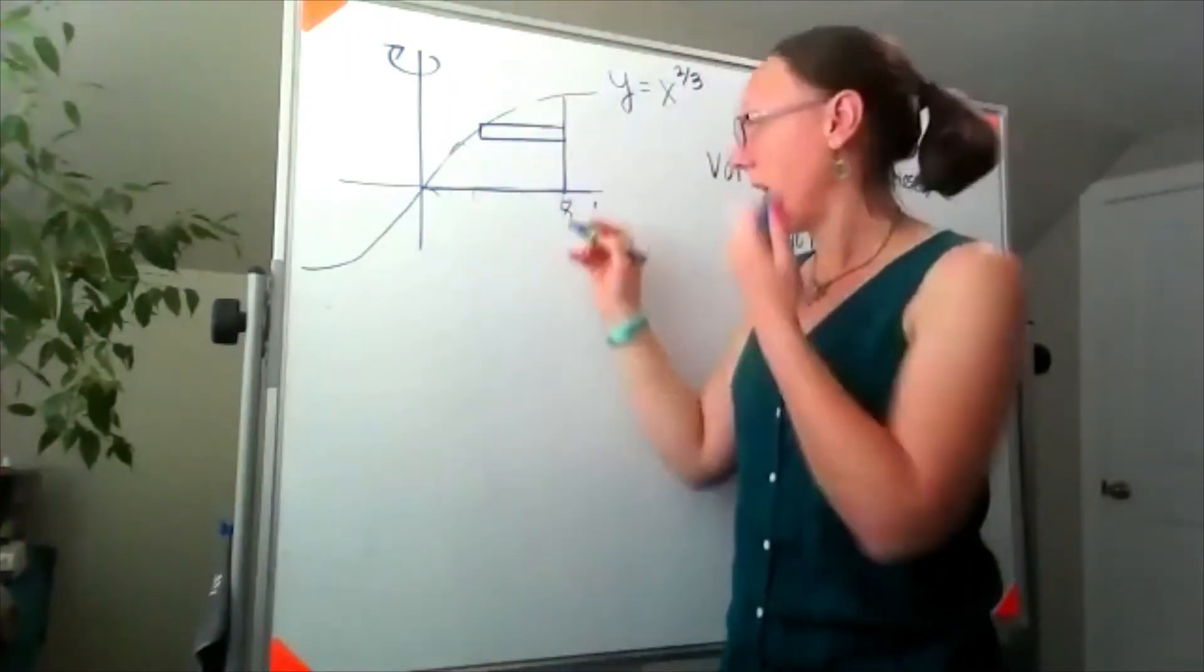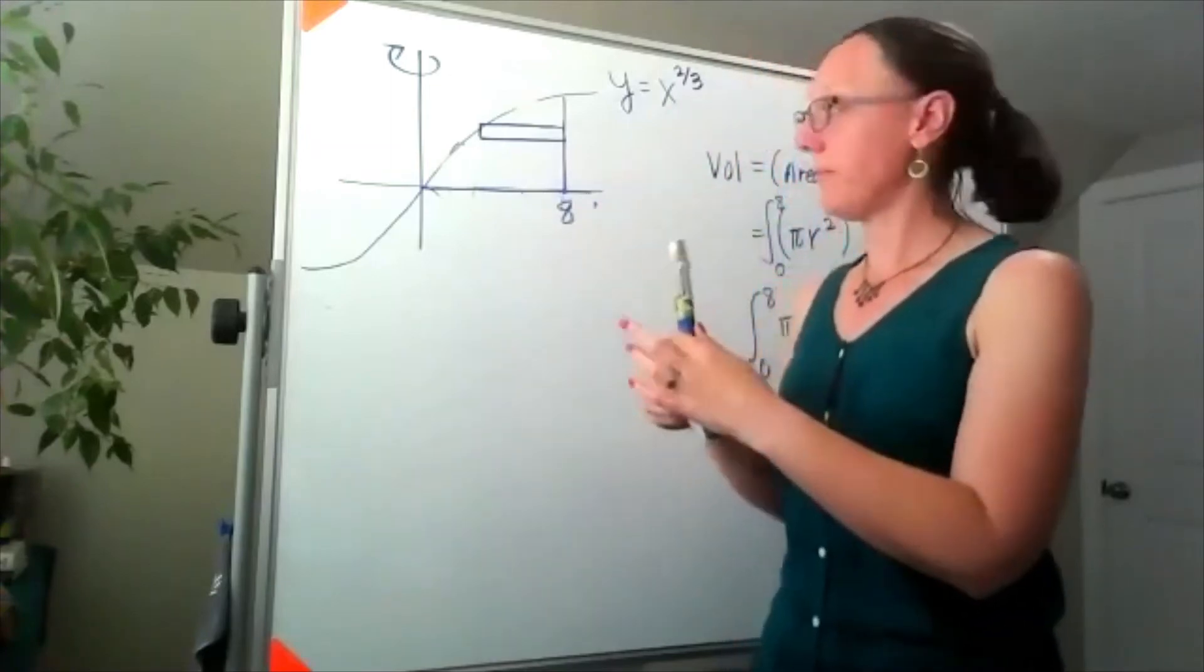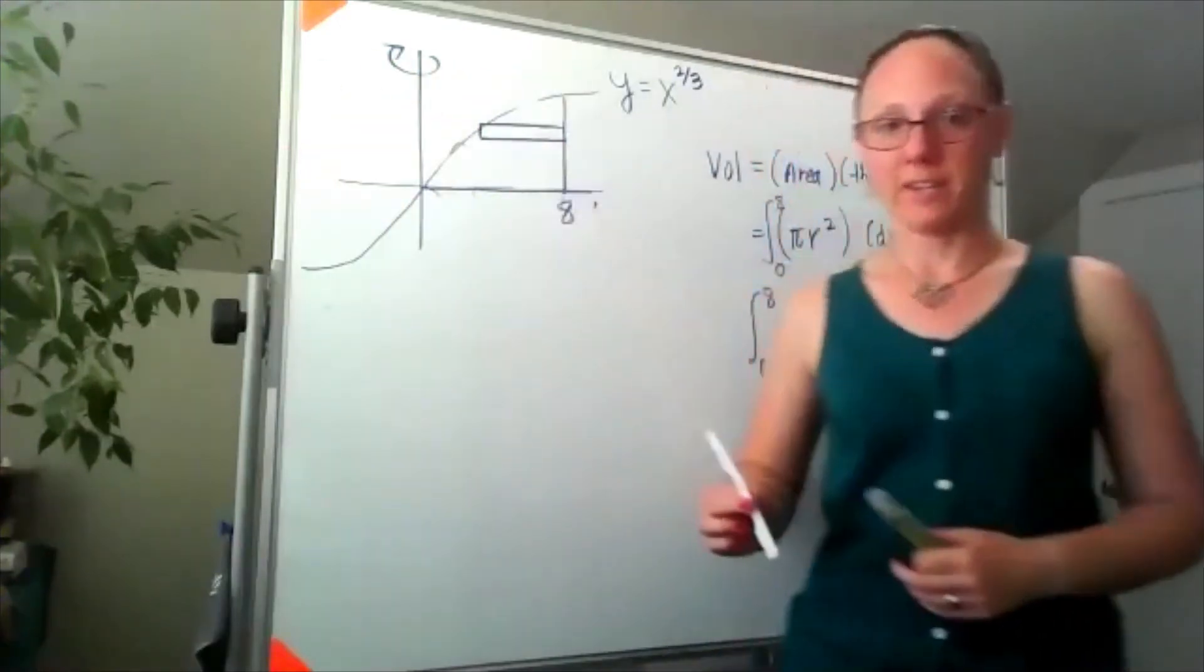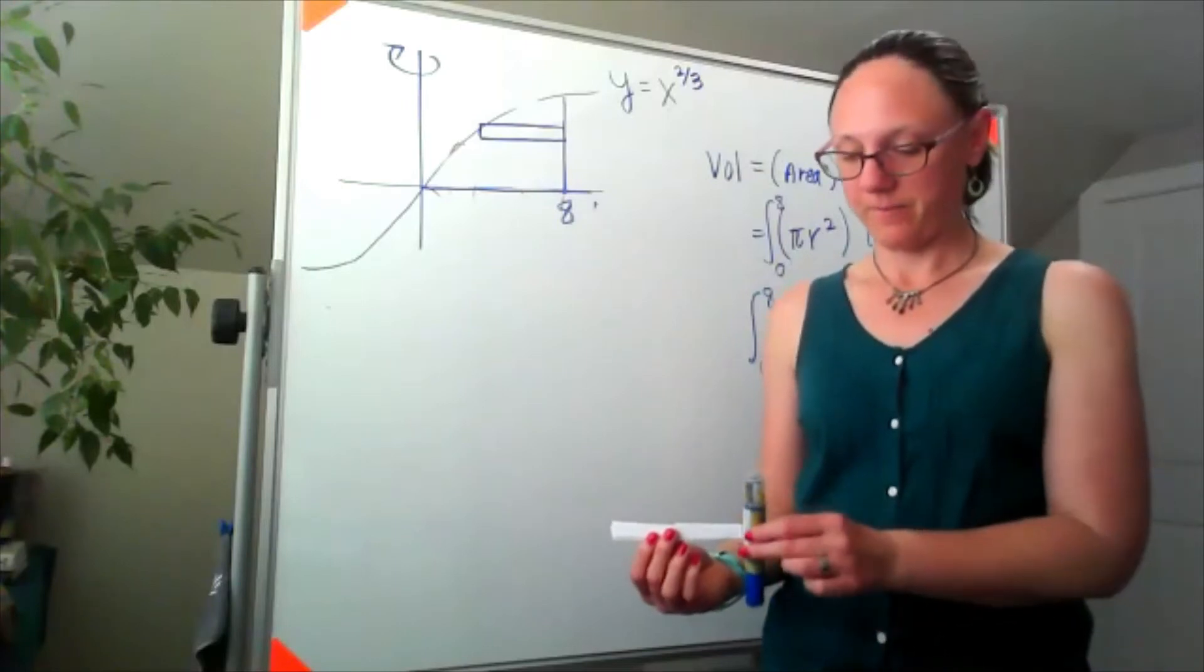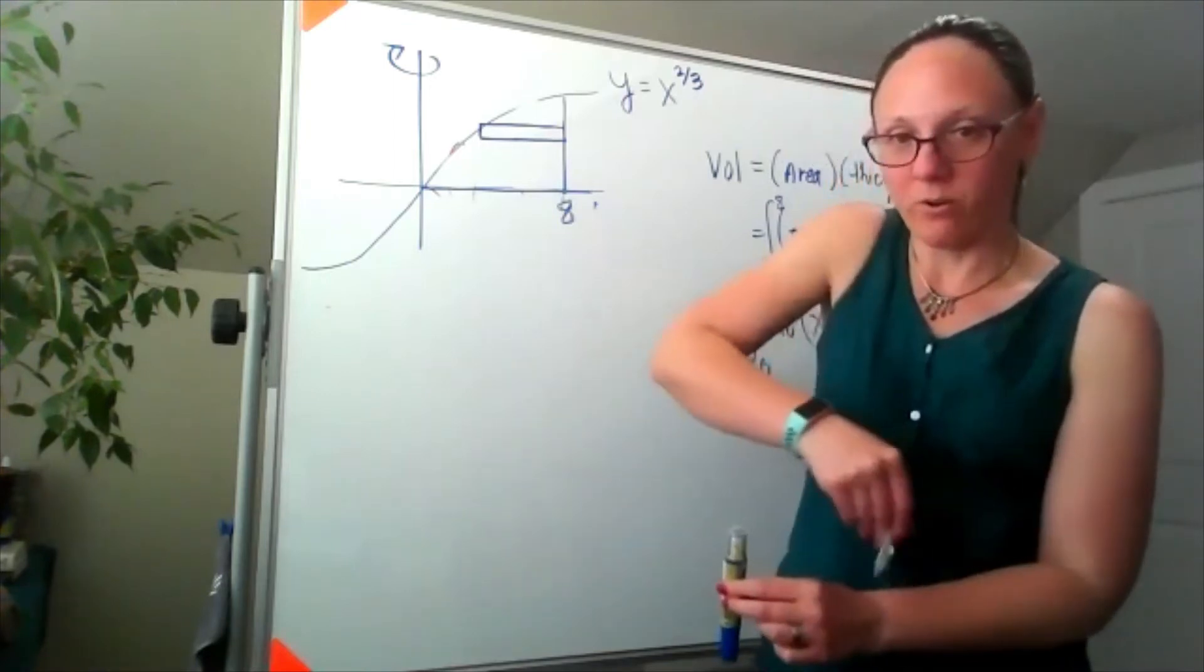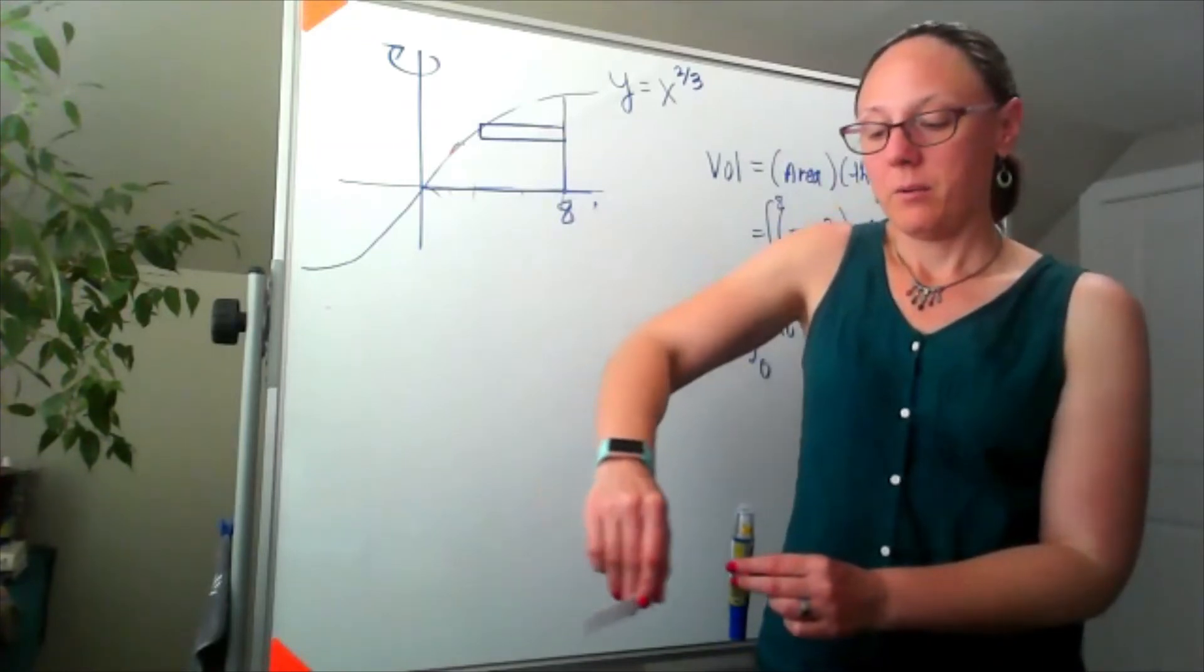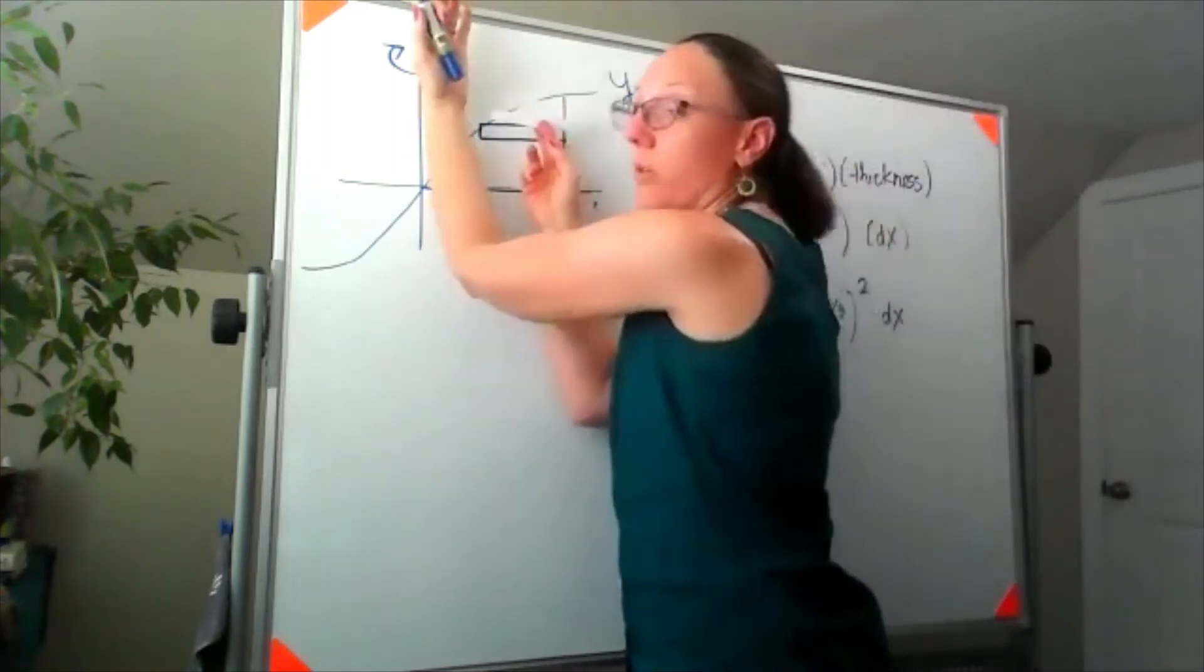That cross section, when I revolve it around the y-axis—here's my y-axis and I'm revolving this around the y-axis—I still sweep out a circle, but this circle has a hole through the middle of it.